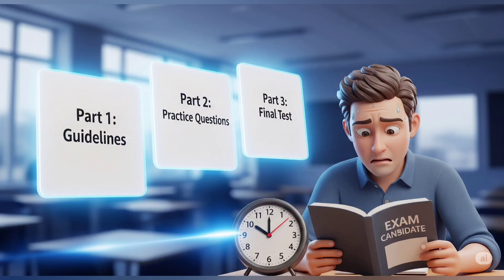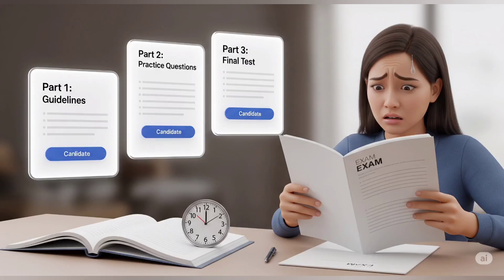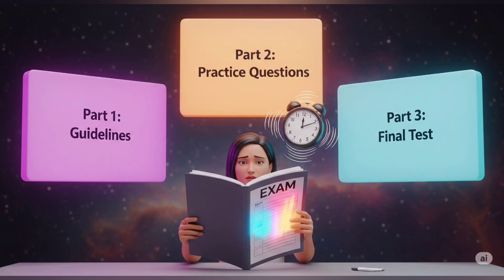The exam usually comes in three parts. Part one is reading and understanding the guidelines — you'll be given around 120 pages, and yes, you are expected to read it all. But don't panic; I'll tell you which sections to focus on the most. Part two is the practice questions, where you start applying what you've learned and realize how tricky the logic really is. Part three is the actual rating exam, and this is where people panic, overthink, or completely fail to manage their time.